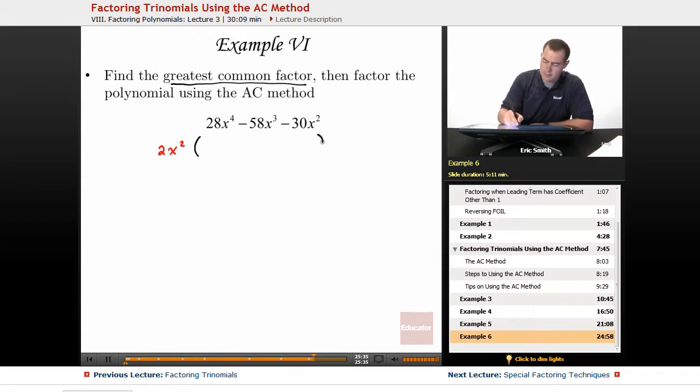Let's see if this makes things a little bit smaller. This would be 14x squared minus 58 divided by 2, 29x, and this one divided by 2, minus 15.